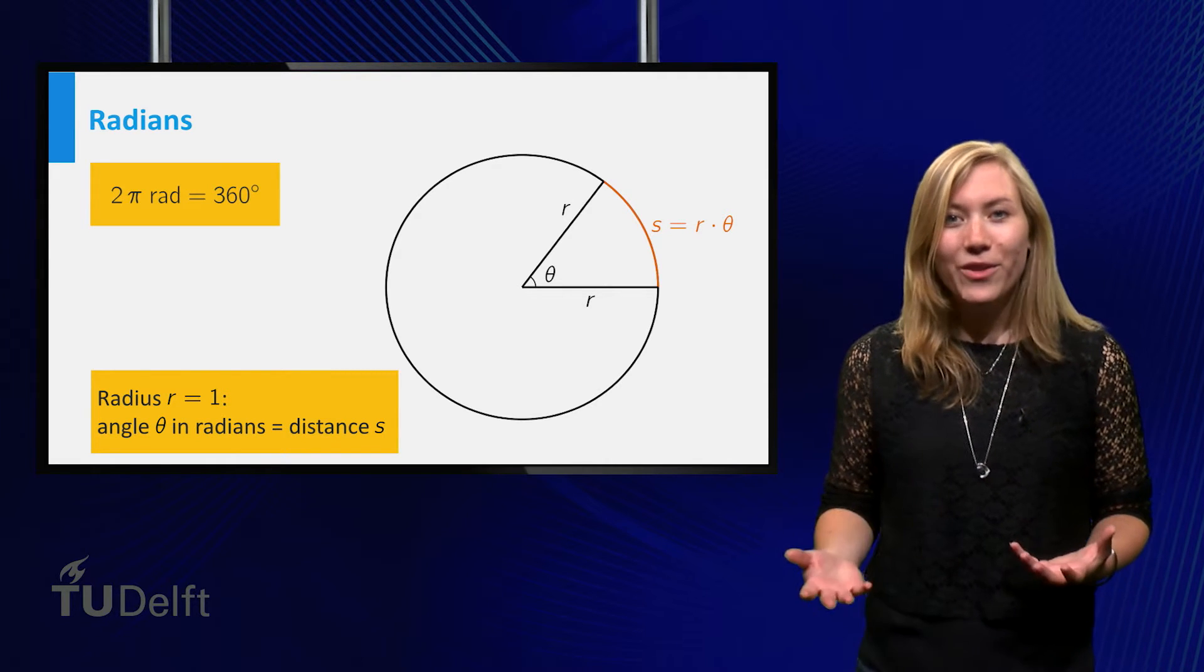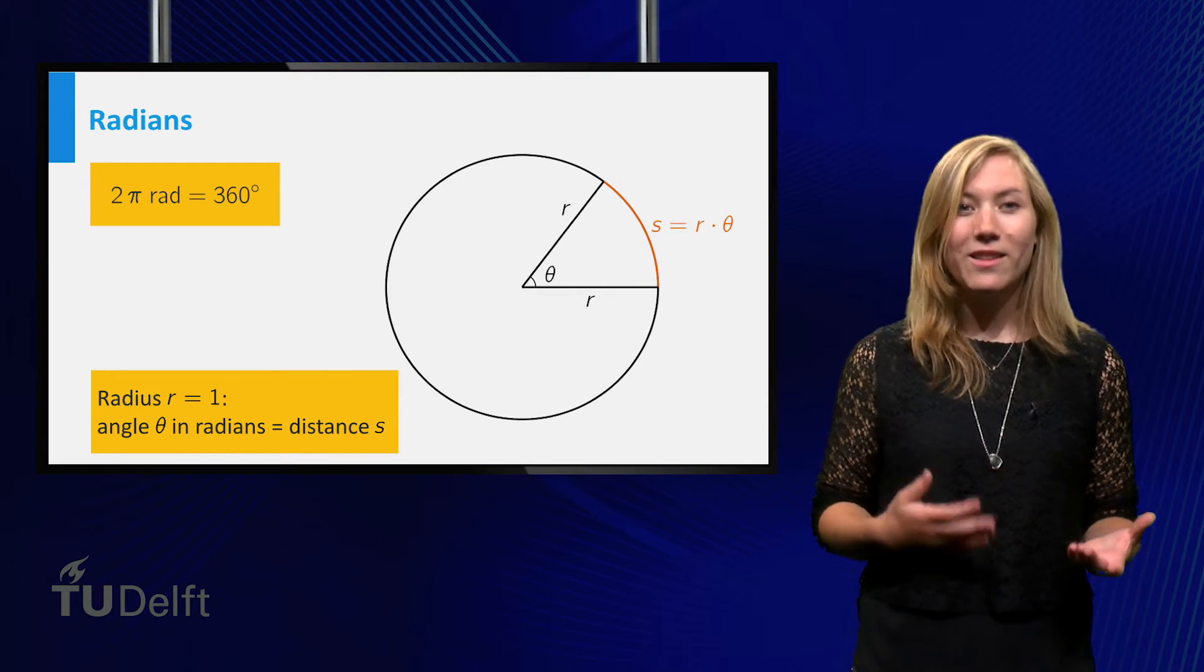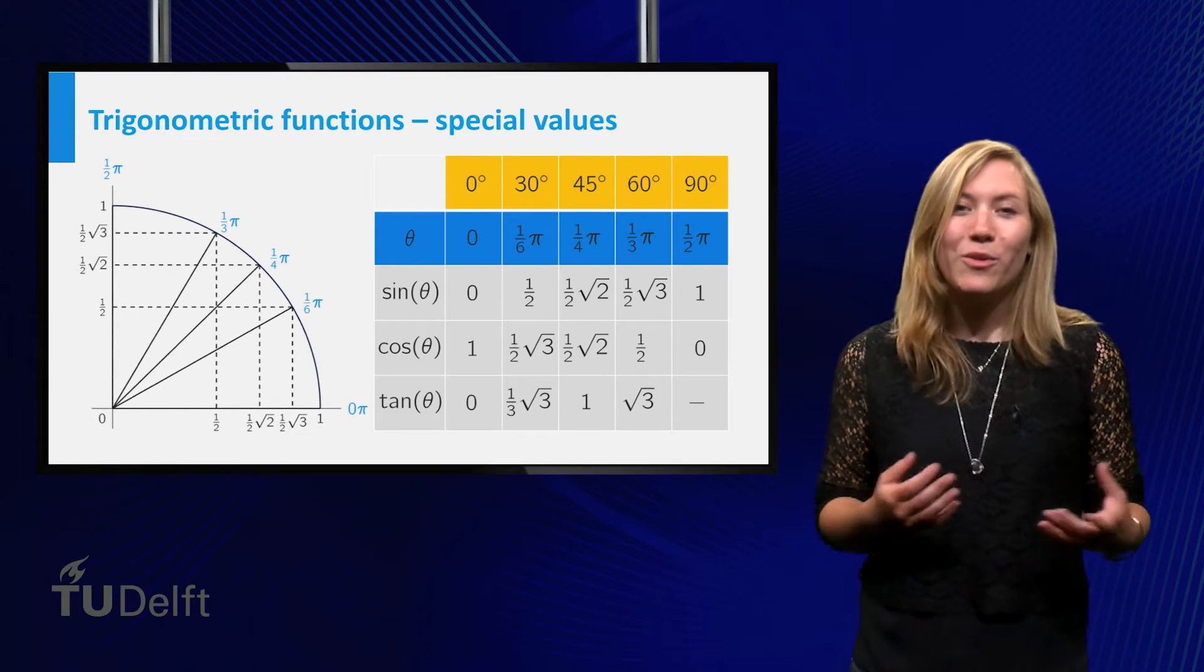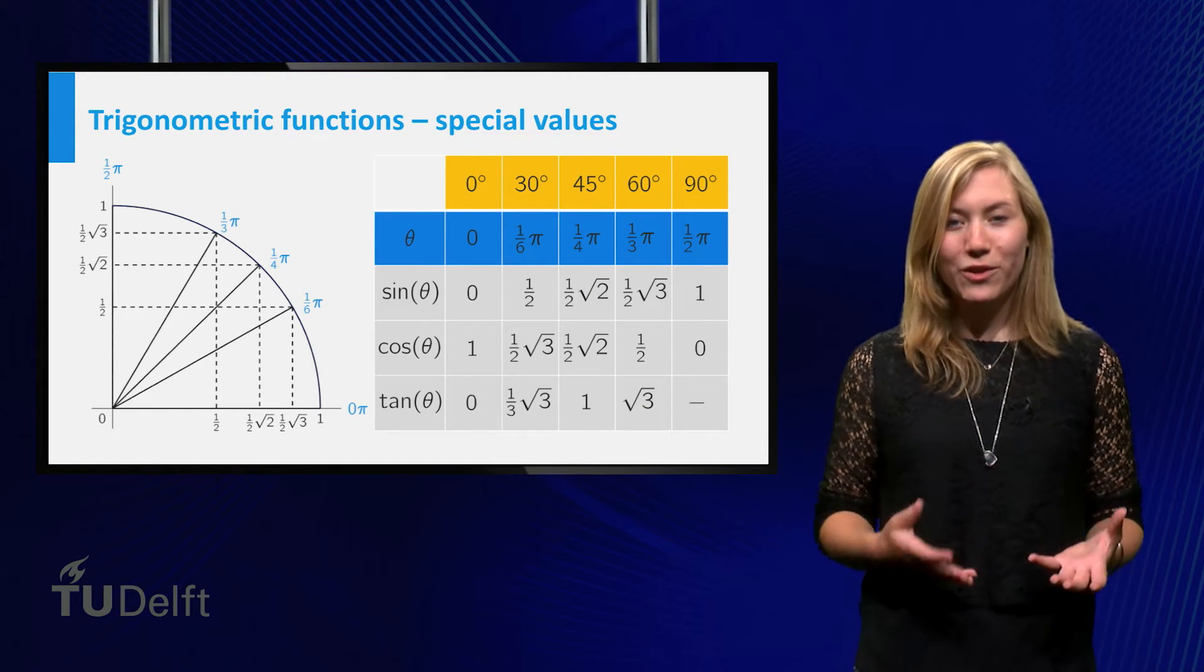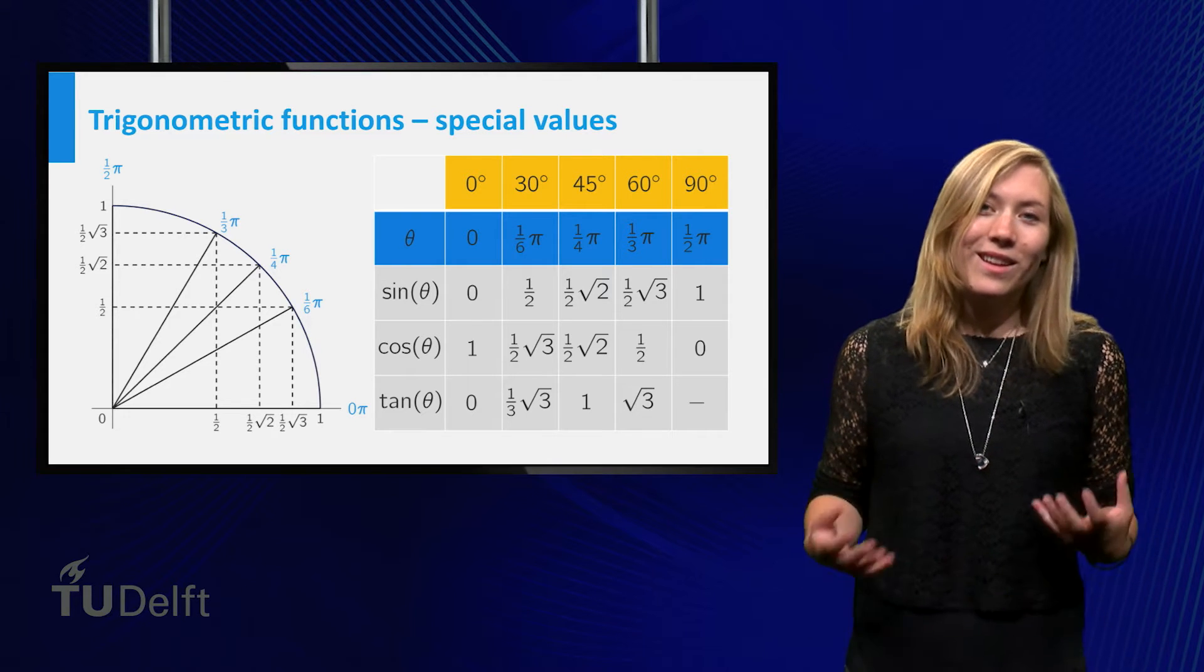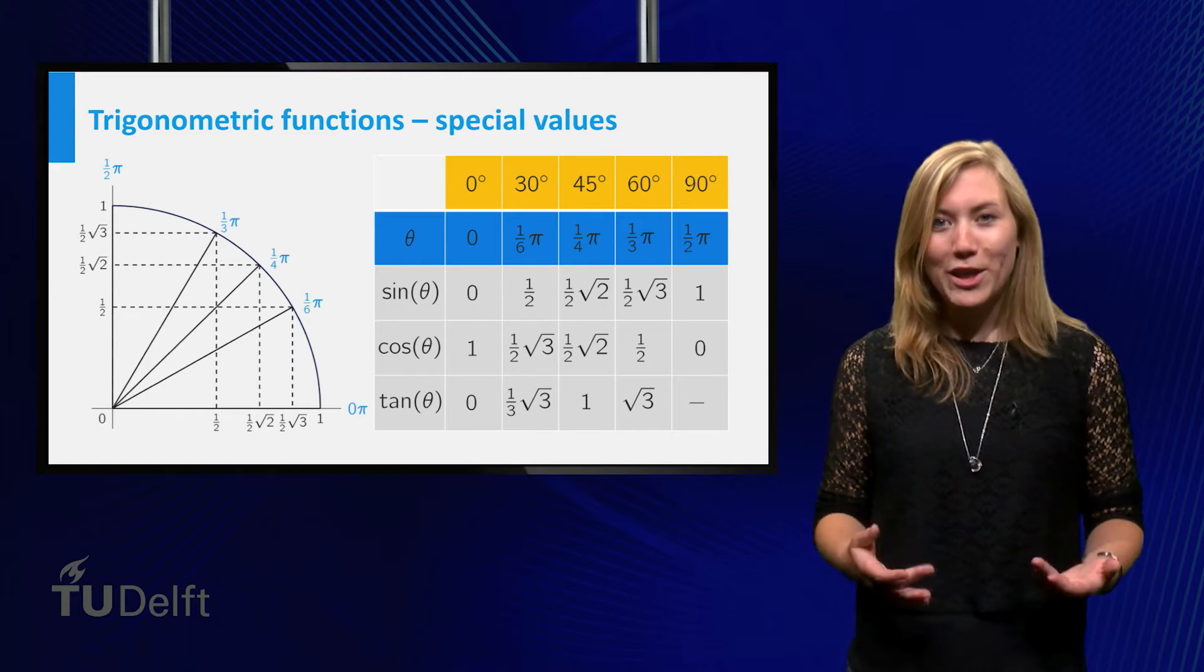To convert degrees to radians, you can multiply by a factor of 2 pi divided by 360. You should know the values of the sine and cosine for certain special angles. These are given in the table. Using symmetries you can extend this table to other special angles.